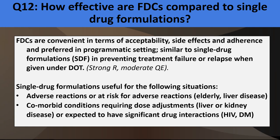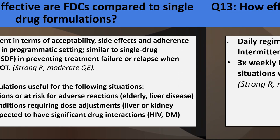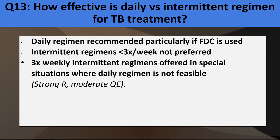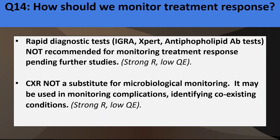There are single-drug formulations for preventing treatment failure or relapse when given under DOT. These are useful in adverse reactions or those at risk for adverse reactions such as the elderly and those with liver disease, and those with comorbid conditions requiring dose adjustments. Daily regimen is recommended. Intermittent regimens of less than 3 times a week are not preferred, and are offered only in special situations where daily regimen is not feasible.